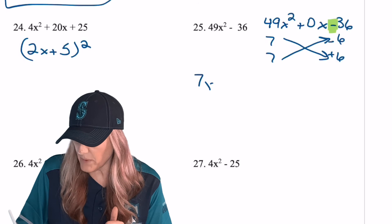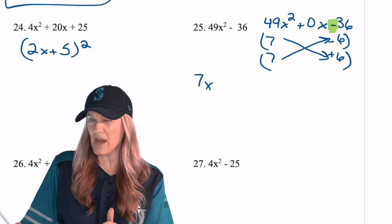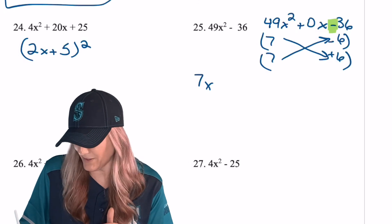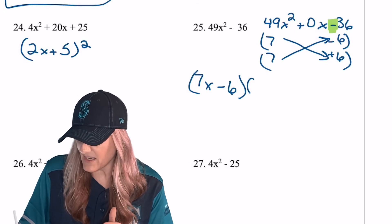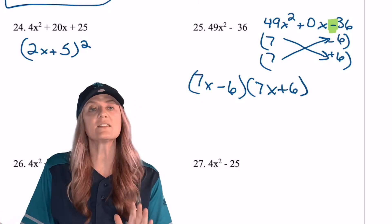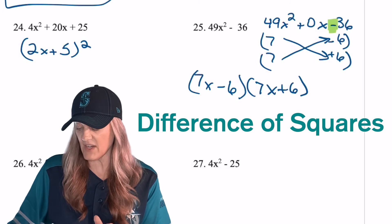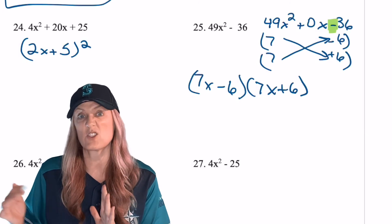So we have to be careful here, because I can always tell when somebody hasn't been really paying attention, they try and write this one like a perfect square trinomial, and it's clearly not. 7x minus 6, 7x plus 6. That's what we want, okay? This is known as a difference of squares, because we're squaring the 7x, and then we're subtracting the 6 squared.